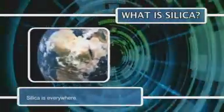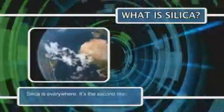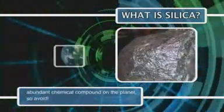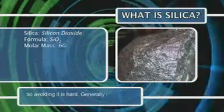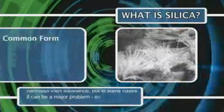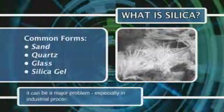Silica is everywhere. It's the second most abundant chemical compound on the planet, so avoiding it is hard. Generally it is a harmless inert substance, but in some cases it can be a major problem, especially in industrial processes involving water and heat, such as power generation.